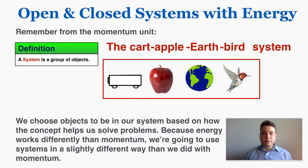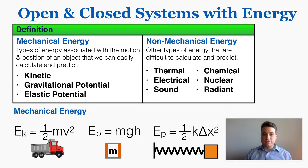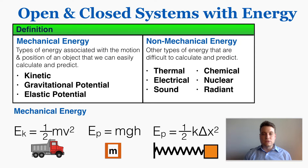Before we go any further we need to define mechanical energy and non-mechanical energy. Mechanical energy is any type of energy associated with the motion and position of an object that we can easily calculate and predict. Based on that definition, kinetic energy, gravitational potential energy, and elastic potential energy are the three types of mechanical energy — the only ones with very specific equations associated with them.